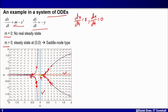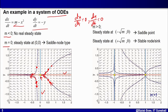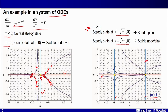Now let us take the third case: when m > 0. I have two steady states: (−√m, 0) and (+√m, 0). I have drawn the phase portrait for m = 1. The null clines have intersected at two positions — one yellow dot at x = +1 and another at x = −1. Let us look at the behavior of trajectories around each steady state.